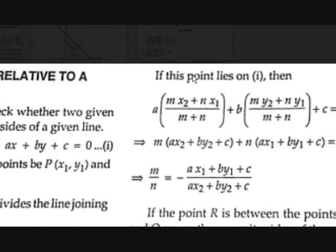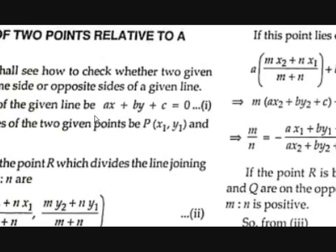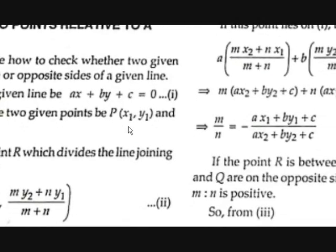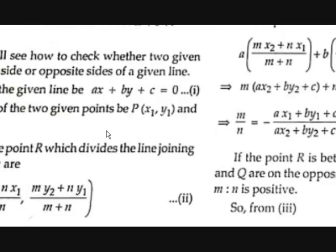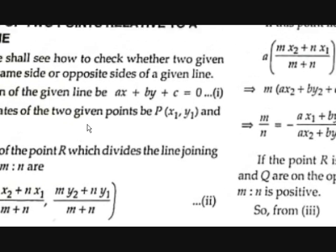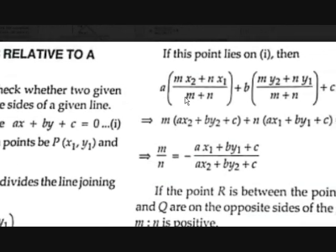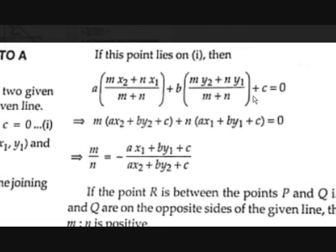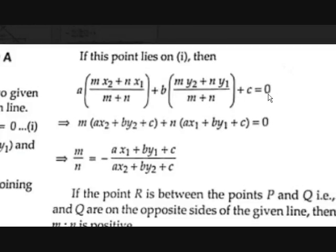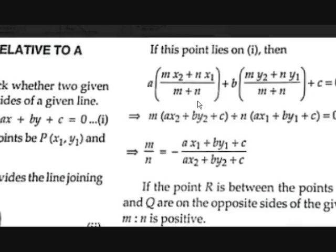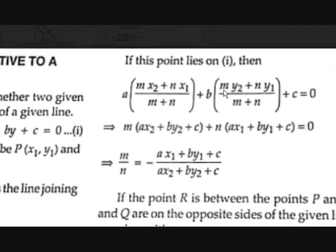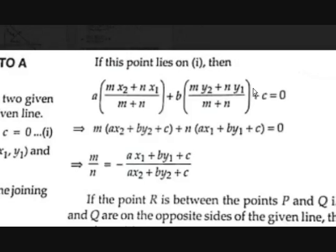If this point lies on equation 1 — R is the point on equation 1 which is divided by the line passing through P and Q — so the coordinates of R lie on the line. If we substitute those values: A·(MX2 + NX1)/(M+N) + B·(MY2 + NY1)/(M+N) + C = 0. Taking (M+N) as LCM, we get A(MX2 + NX1) + B(MY2 + NY1) + C(M+N) = 0.